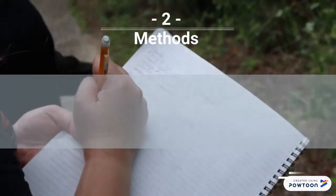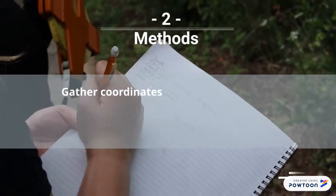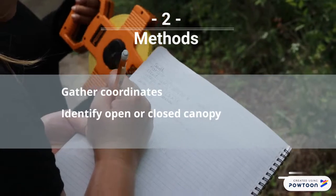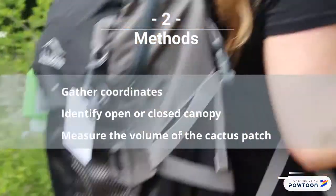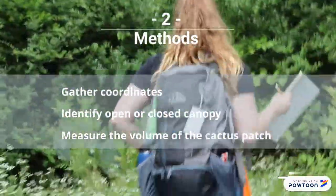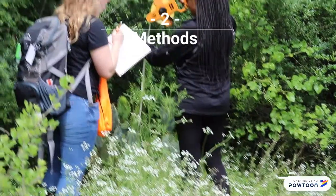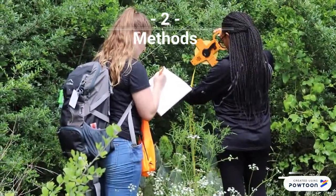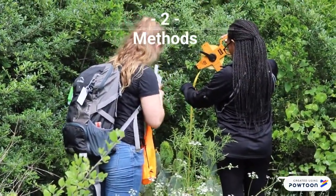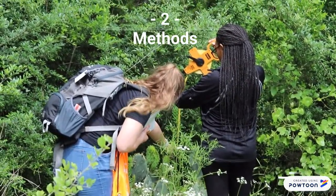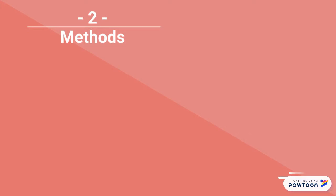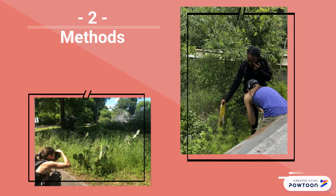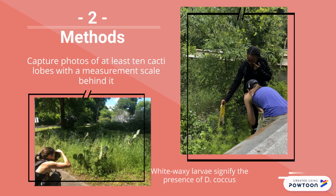Our methods included obtaining the coordinates of the cactus patch, identifying the canopy type, and measuring the volume of the cactus patch. We would measure the height of the cactus by starting at the base and measuring to the highest lobe, allowing us to get the largest volume possible. We also captured around 10 pictures of individual cactus lobes within the patch, making sure to have a scale in the picture for later analysis.